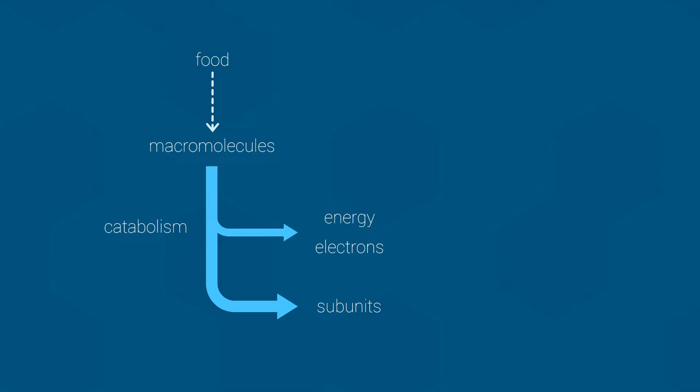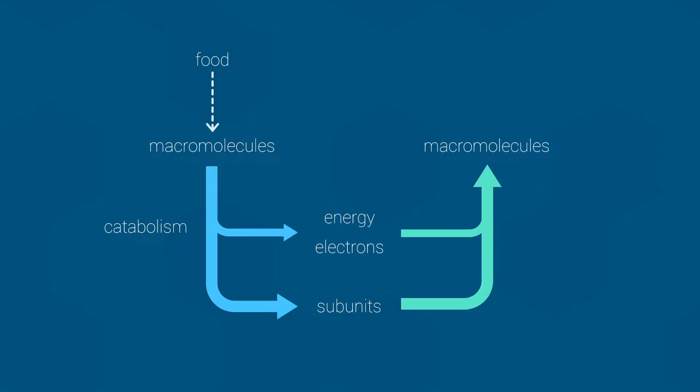The second half of metabolism involves taking the energy, electrons, and subunit molecules, and combining them into new macromolecules that the organism needs. This half of metabolism is known as anabolism. Eventually, every organism becomes food for another organism, and the cycle repeats itself.